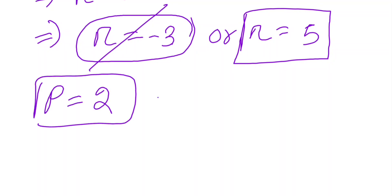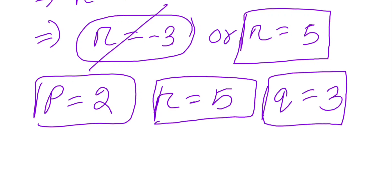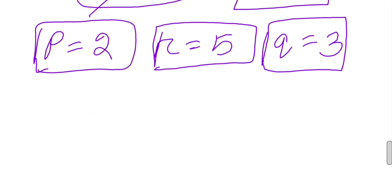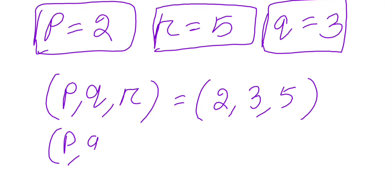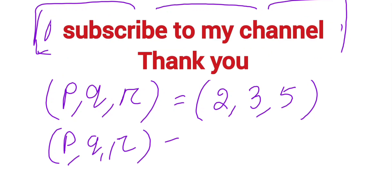So from the previous assumption, if p equals 2, then r equals 5, and then using this value we will get q equals 3. You can plug this value and verify. So we will get the only solution of this system is pqr, that is 2, 3, and 5. Or you can even change the value 3 to 5. So this is the only solution we have. Hope you liked it, see you next time.